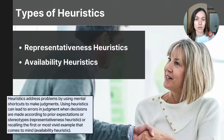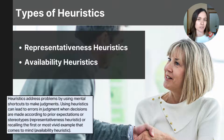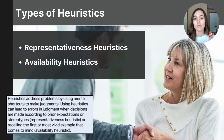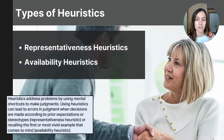The second heuristic is the availability heuristic, which involves estimating the likelihood of an event based on how easily examples come to mind. If something is more memorable or more recent in your mind, you might assume it is more common or more likely to occur, and make a decision based on that information being readily available in memory rather than how likely it actually is. For instance, if you recently heard a news report about plane crashes, you might overestimate the risk of flying, even though statistically flying is much safer than driving.